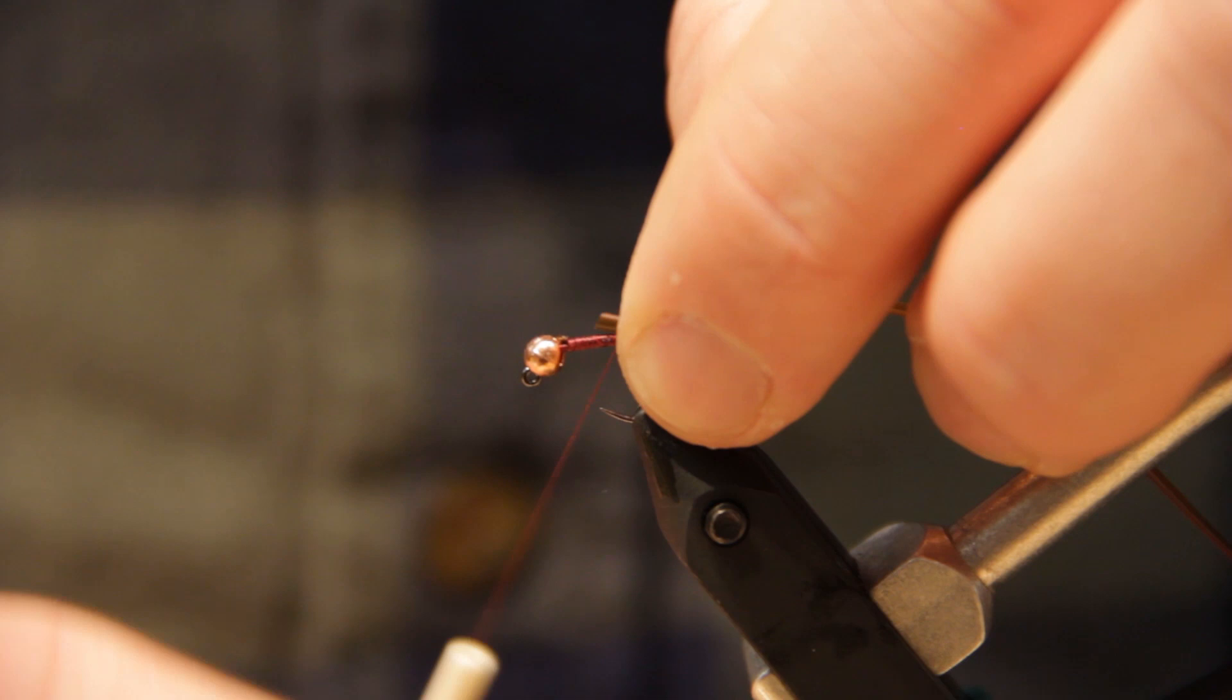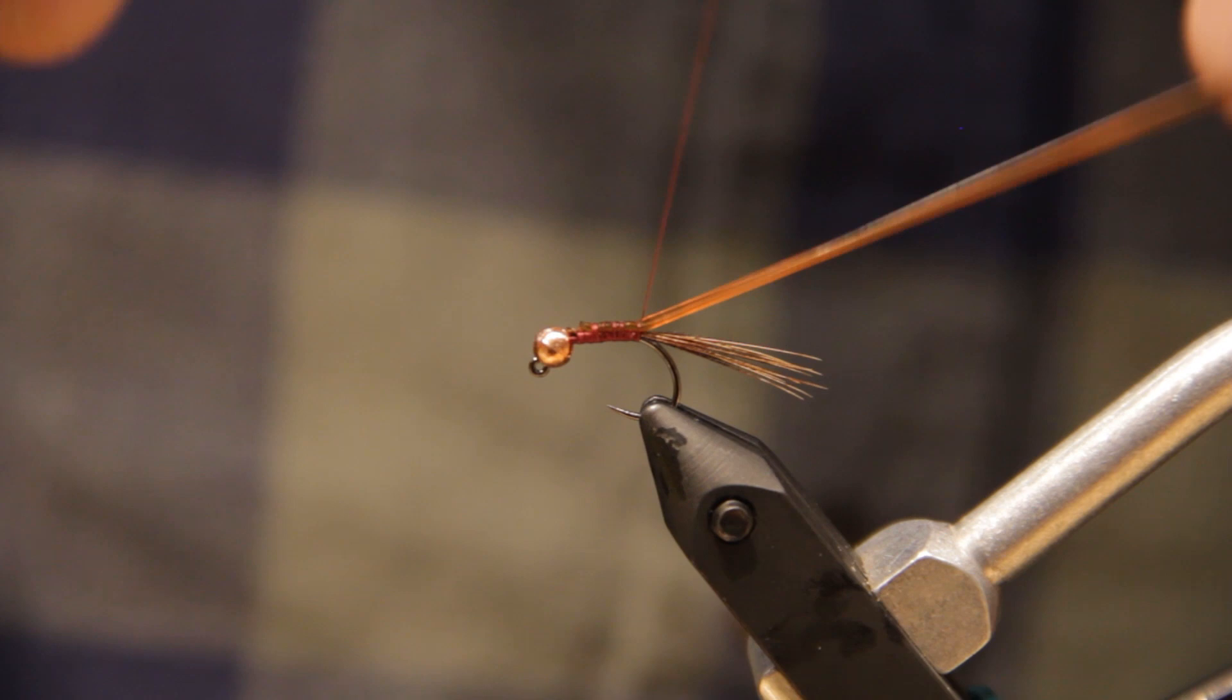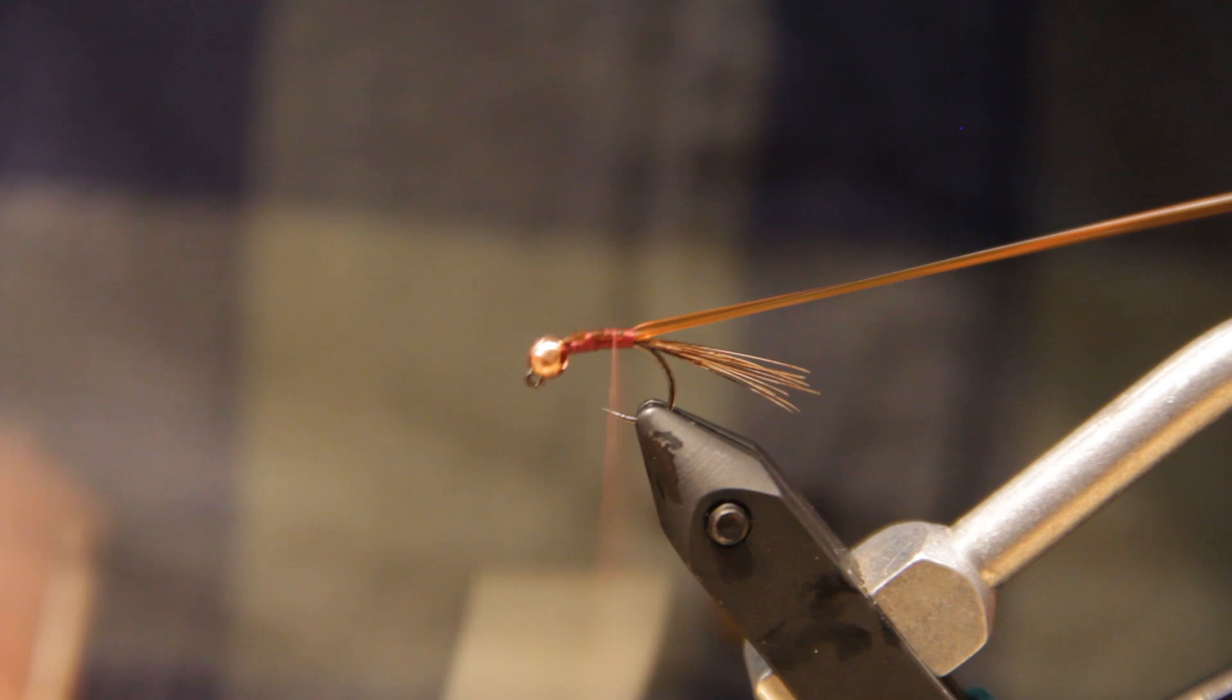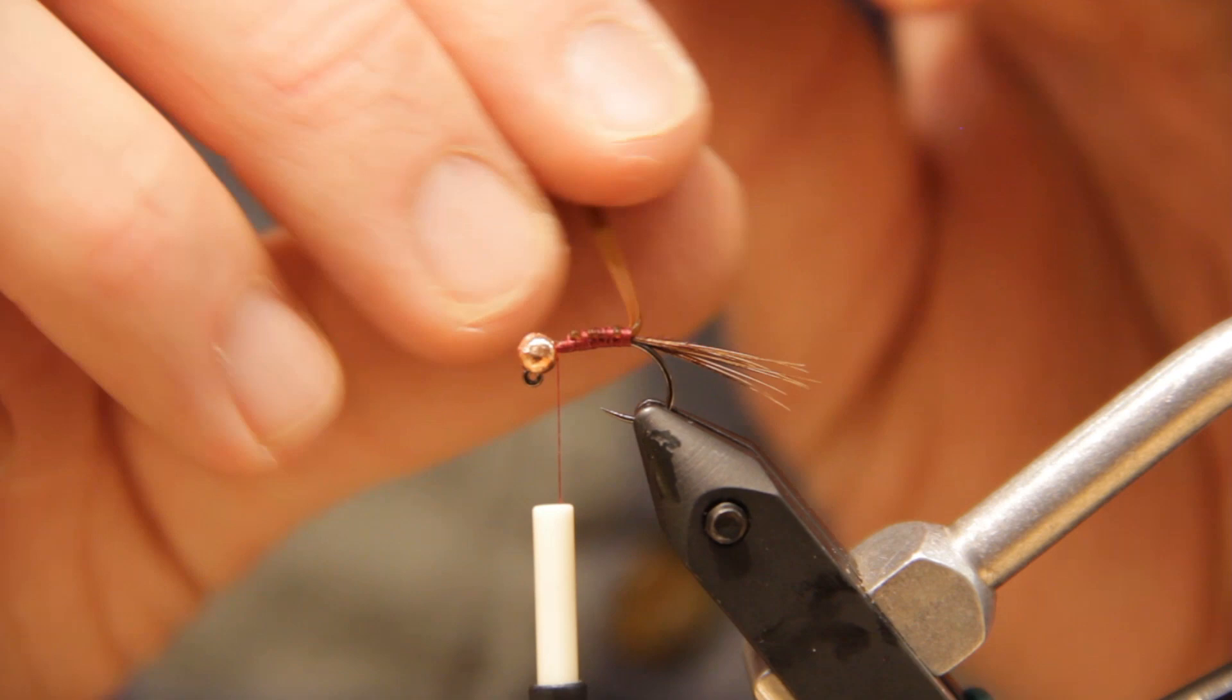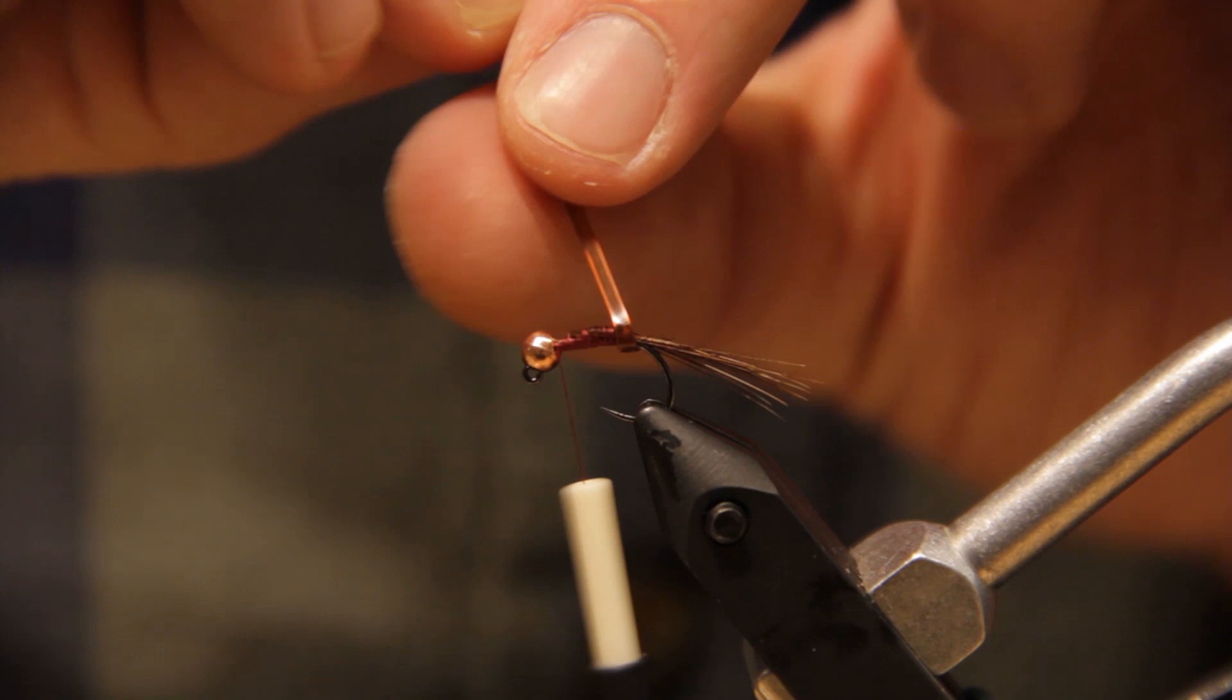Vinyl rib has a small crescent shape to it, so you want to make sure when you wrap, you're going to be able to wrap the round side facing upward. I'm gonna get that tied in. Really cinch that down, it likes to move. I'm gonna bring my thread back up to the eye, and then I'm going to wrap this forward.